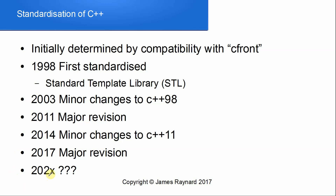The next revision is written as 2020x — the convention is to write the decade followed by the letter x to show you're not quite sure when it's coming out. 2011 was originally called 2000x, supposed to be 2008, but like all the best software projects it fell behind schedule. This one is supposed to be in 2020 and should include all the exciting things that were promised in 2017.